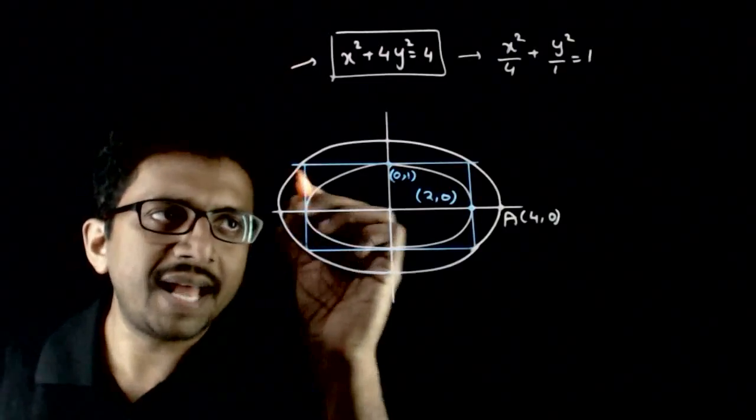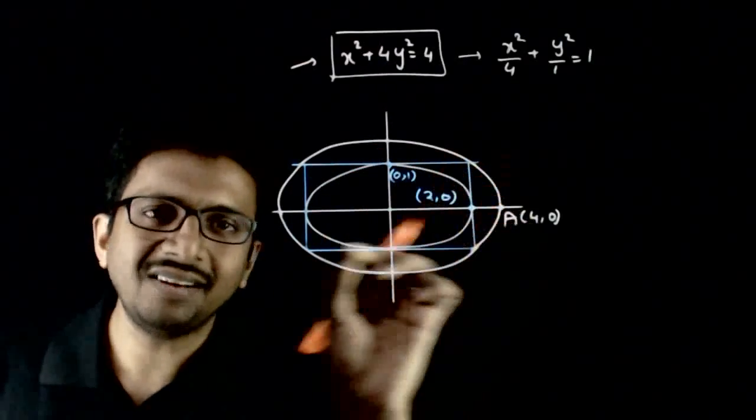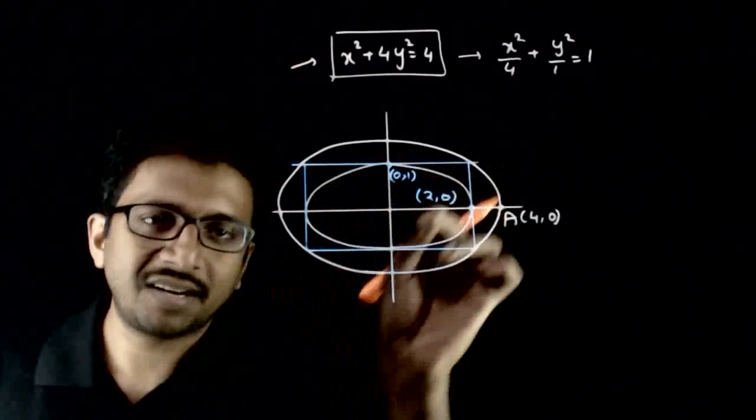Now, a triangle is circumscribing this ellipse—sorry, you have a rectangle circumscribing this ellipse. Now, once you have this rectangle,